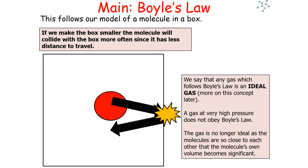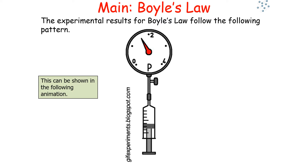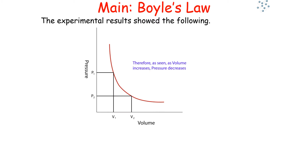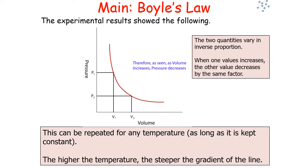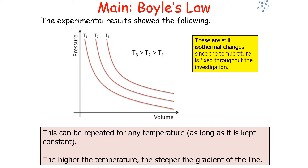We say that any gas that follows Boyle's law is an ideal gas. A gas at very high pressure does not obey Boyle's law, so the gas is no longer ideal as the molecules are so close to each other that the molecule's own volume becomes significant. The experimental results for Boyle's law show that pressure and volume are inversely proportional — when one value increases, the other decreases by the same factor. This graph can be repeated for any temperature as long as it's kept constant, and the higher the temperature, the steeper the gradient of the line. These are still isothermal changes.